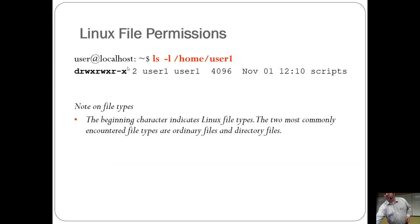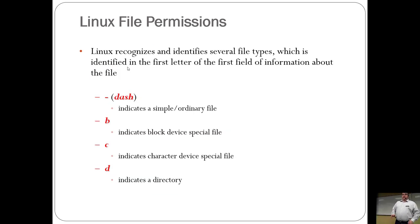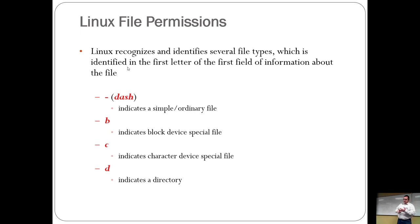What we're going to focus on most is that first set. The very first byte identifies what this is: a dash indicates a regular ordinary file. 'B' is a special block device — a block device is also known as a hard disk, a flash drive, a serial port. Anything you can stream data to shows up as a block device.